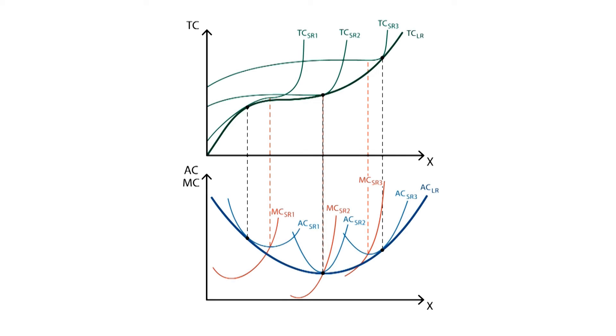We draw the marginal cost curve, this time, for the long-run. As always, the marginal cost curve will cross its corresponding average cost curve at the exact point where the average cost is minimum.